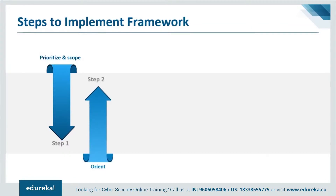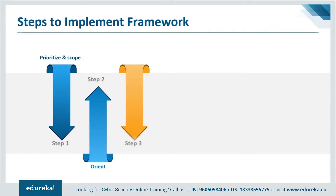Step two is to orient yourself. Once the scope of the cybersecurity program has been determined for the business line or process, the organization identifies related systems and assets, regulatory requirements, and the overall risk approach. The organization then consults sources to identify threats and vulnerabilities applicable to those systems and assets. Step three is to create a current profile: the organization develops a current profile by indicating which category and subcategory outcomes from the framework core are currently being achieved. If an outcome is partially achieved, noting this fact will help support subsequent steps by providing baseline information.